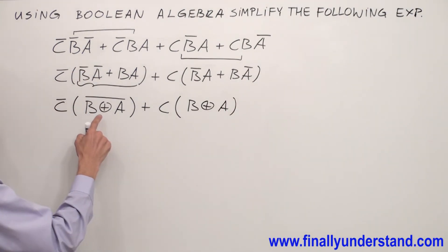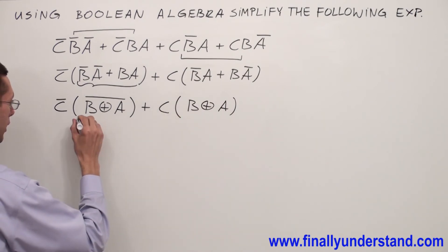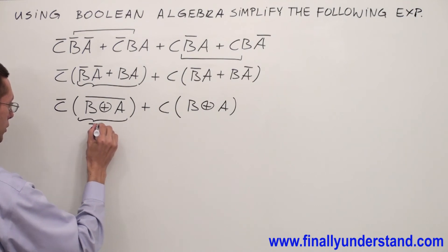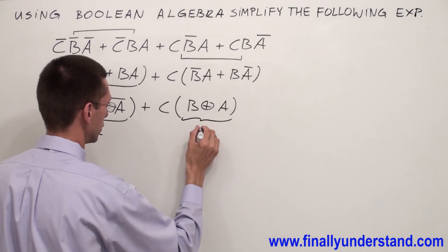Now, exclusive NOR and exclusive OR are complements. That's why I'm going to call this Q-bar, just to make it a little bit simpler. And this one I'm going to call Q.